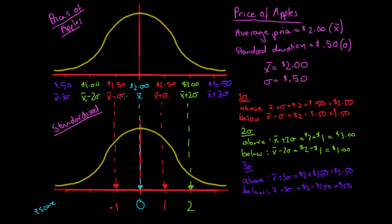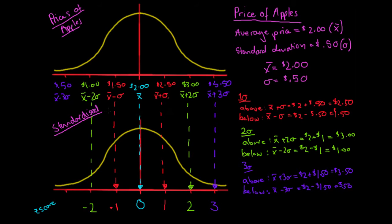Looking at the $1.00 value — that's negative two standard deviations from the mean — it corresponds to a standardized value of negative two. For x-bar plus three standard deviations ($3.50), we have positive three standard deviations, giving a z-score of three. By symmetry, three standard deviations below the mean gives a z-score of negative three.